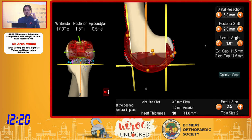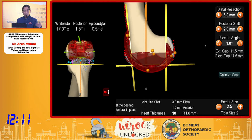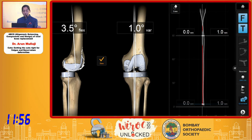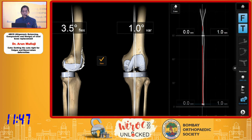Once you've corrected and balanced your extension gap, if it's a varus deformity you do the medial releases; if it's a valgus deformity it's already corrected. You then balance the flexion gap to the extension gap using femoral component size and placement. The navigated images of this patient show a perfectly balanced result at the end of surgery.